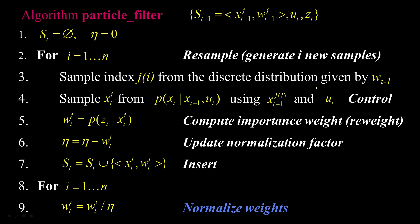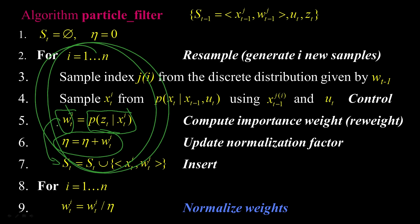Then what I do is reweight that sample. I weight it by how likely the measurement would have been — this is my likelihood — how likely would that measurement have been if that new sample is actually where the object or the robot was? That becomes my new weight. That's the multiplication step we did before: we took our prior, we had those lumps, we multiplied and got them through. We just keep track of the sum of those weights, add that particle to our growing set of particles, and do this N times.